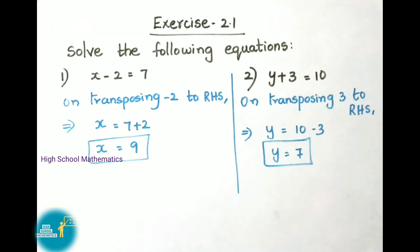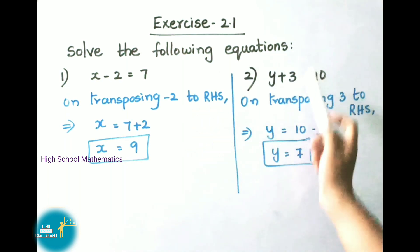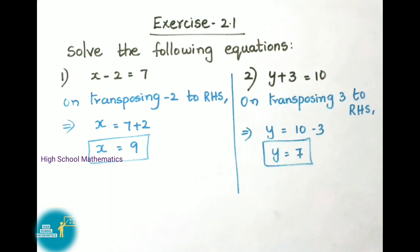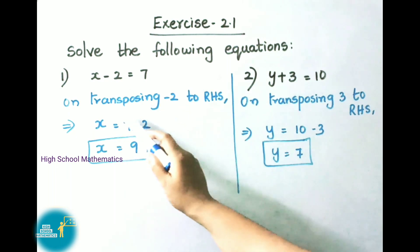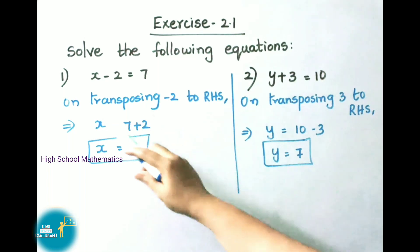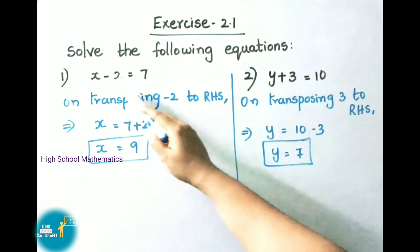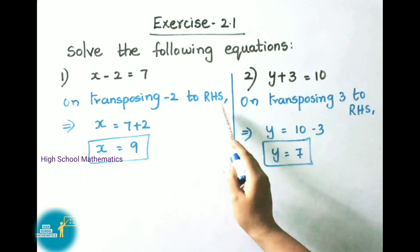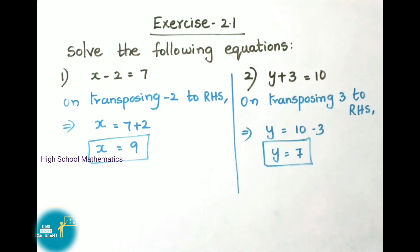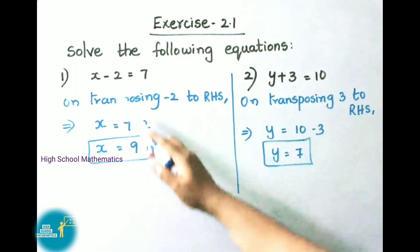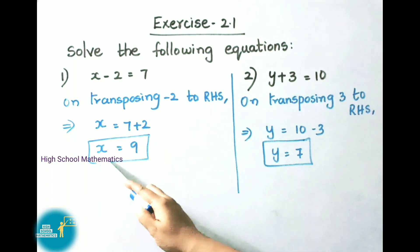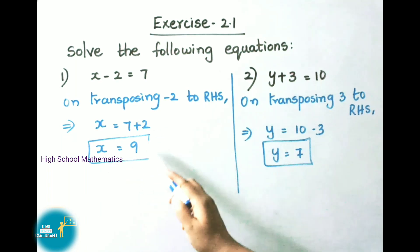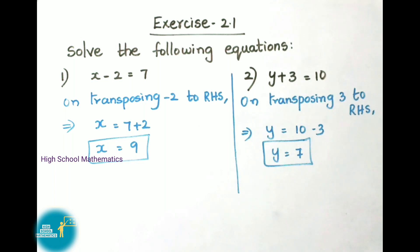See now exercise 2.1. Solve the following equations. First: x minus 2 equals to 7. To remove minus 2 we do transposing. On transposing minus 2 to RHS it becomes plus 2, so x equals to 7 plus 2. Therefore x equals to 9.